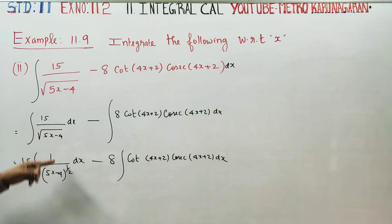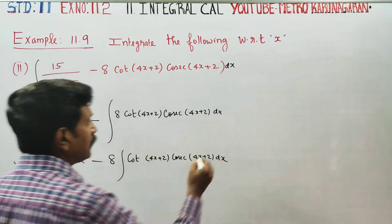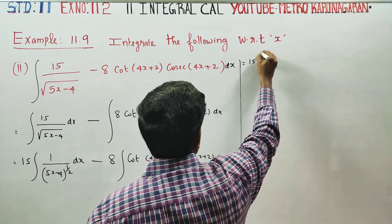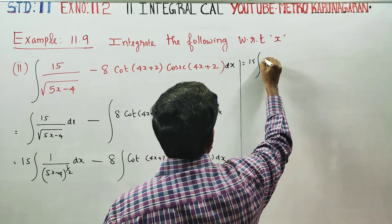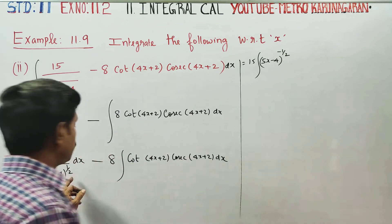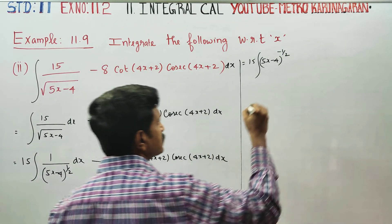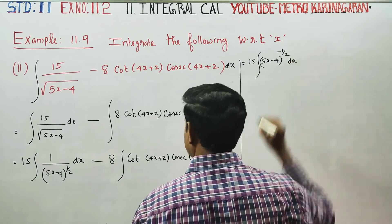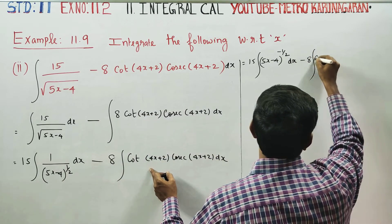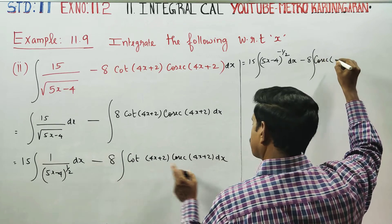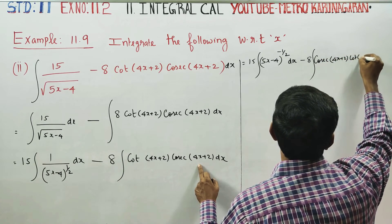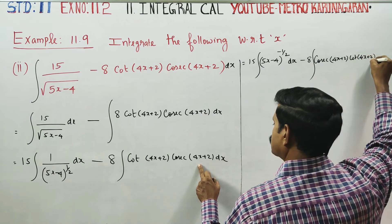Next stage, raise 15: integration of (5x minus 4) whole power minus half, plus half, minus half dx. Next, minus 8 cosecant(4x + 2) cot(4x + 2) dx. We know the integral of cosecant(x) cot(x) is minus cosecant(x).